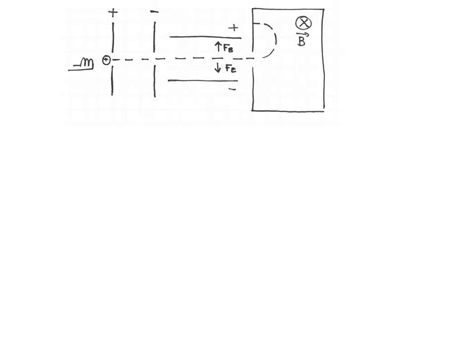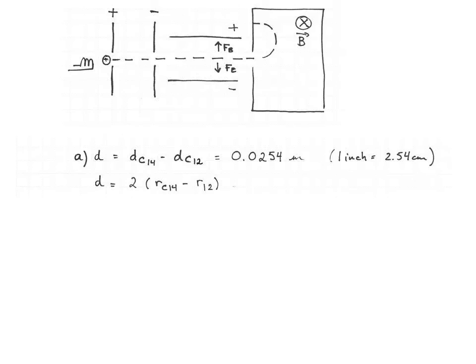Now we want the distance between the carbon-12 and the carbon-14 at the detector to be 1 inch. Since the particles have a semicircular trajectory, the distance between the entry point and arrival at the detector equals 1 diameter. Therefore, we want the diameter of the carbon-14 to be 1 inch bigger than the diameter of the trajectory of the carbon-12. We can write: d(carbon-14) minus d(carbon-12) equals 0.0254 meters. Since the diameter equals 2 times the radius, we want 2·r(carbon-14) minus 2·r(carbon-12) equal to 0.0254 meters.